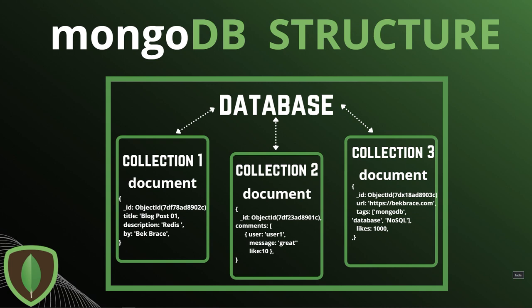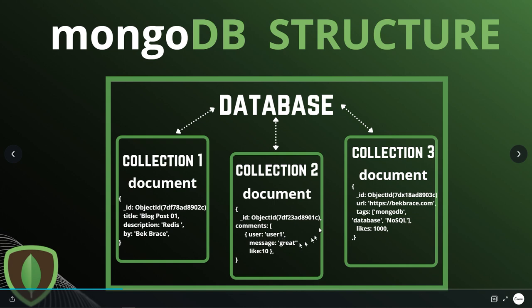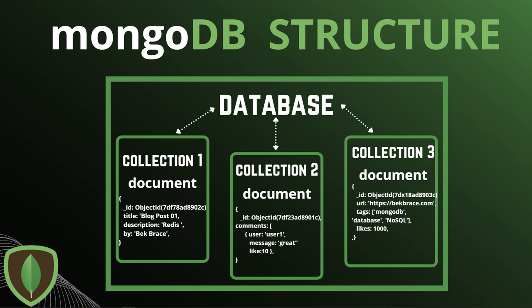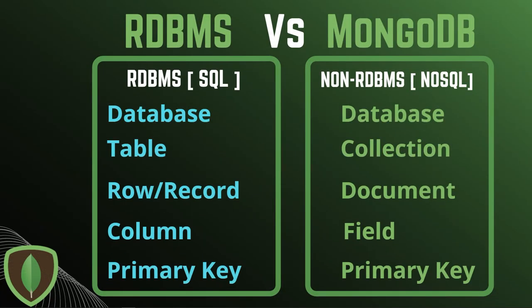Even saying it's fully schemeless isn't entirely accurate, because documents within a collection can have different fields. For example, you have an underscore ID — auto-generated by MongoDB as a 12-byte ObjectId — you can have a title, description, embedded documents inside other documents, or independent documents you can reference. A document is a set of key-value pairs with dynamic schemas, meaning documents in the same collection don't need to have the same structure.